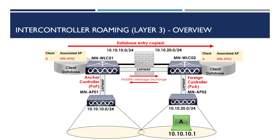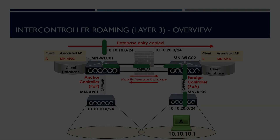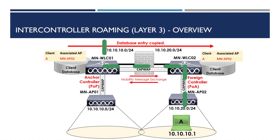Client A will keep the IP address it had while associated to AP01. To make this possible, a CAPWAP tunnel is created between WLC01 and WLC02. This CAPWAP tunnel is used to tunnel all traffic for client A back to WLC01, allowing client A to retain its IP address and operate on the foreign controller. Traffic to and from client A is routed back to the anchor controller via the CAPWAP tunnel between WLC01 and WLC02.